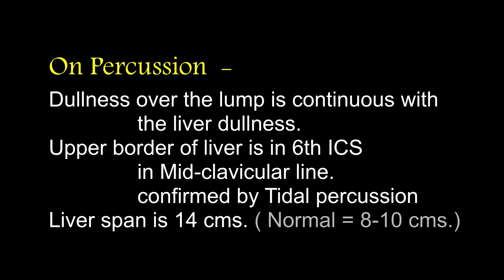The spleen is not palpable. There is no other lump palpable in the abdomen. On percussion, dullness over the lump is continuous with the liver dullness. Upper border of the liver is in the 6th intercostal space in the mid-clavicular line. Tidal percussion shows normal movements of the diaphragm. Liver span is 14 cm — the normal liver span is 8 to 10 cm. It is the distance between the upper and lower hepatic borders in the mid-clavicular line.